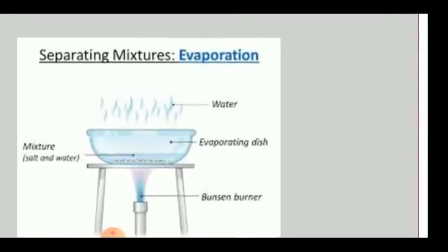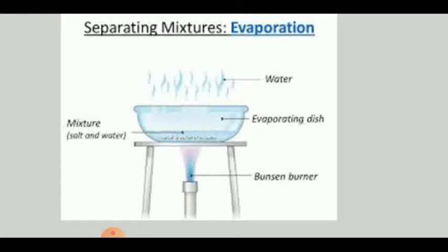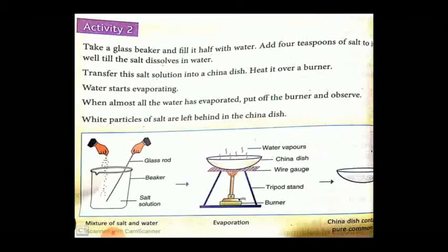Look at this picture — separating mixtures by evaporation. We have a Bunsen burner below, then a stand, on top of which we placed a wire gauze (a net-like wire) so we can easily place any dish on it. Then we took an evaporating dish — a glass dish — filled it with salt water. When heated and brought to a boil, the water goes up as vapor, and only the salt remains below.